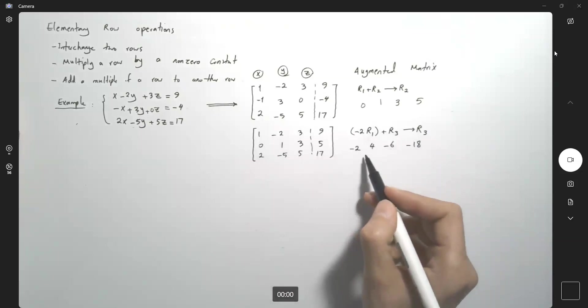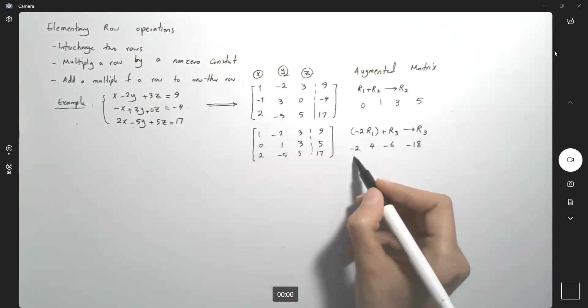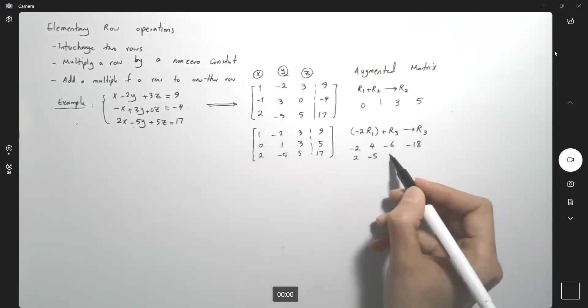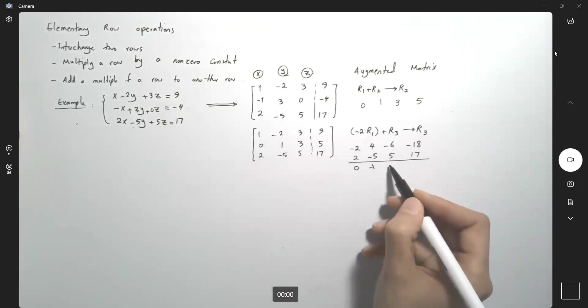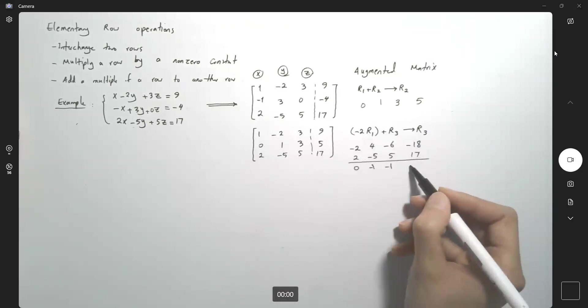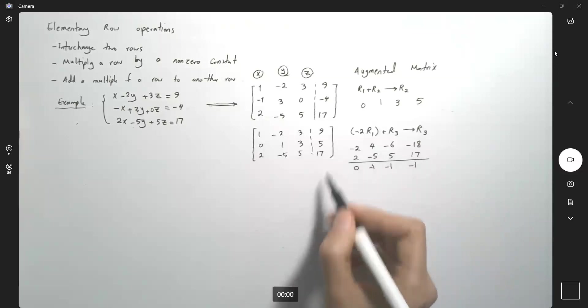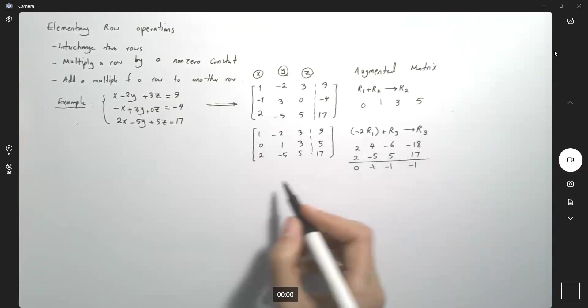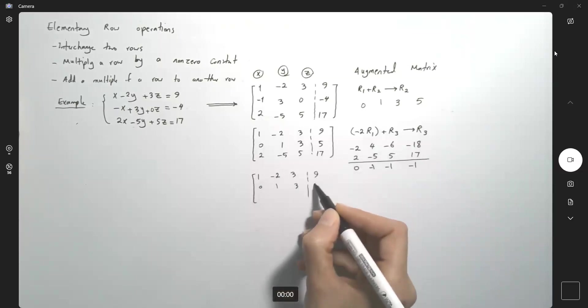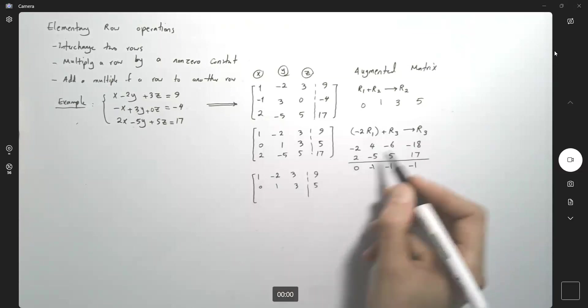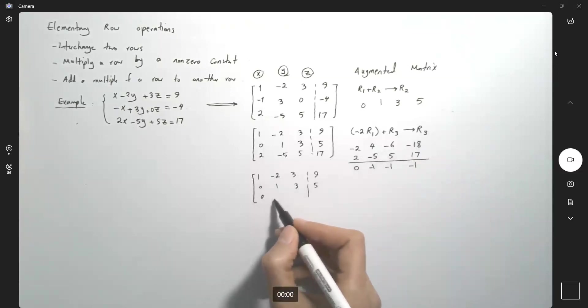We are taking this row and adding that to R3. Adding that to 2, negative 5, 5 and 17. So addition gives us 0, negative 1 and then negative 1 and here negative 1. So this becomes your new R3. So let's write everything down. 1, negative 2, 3 and 9. Then 0, 1, 3 and 5. And this is your new row which is going to replace R3. 0, negative 1, negative 1 and negative 1.